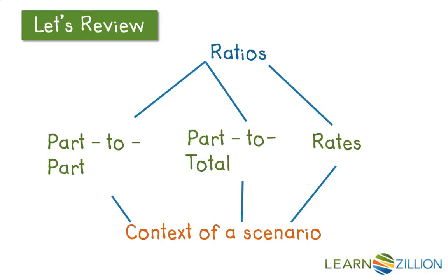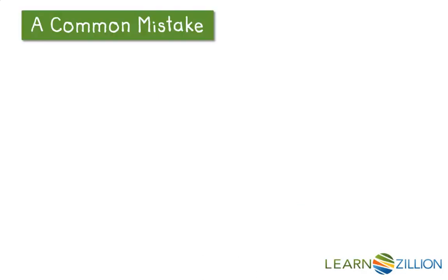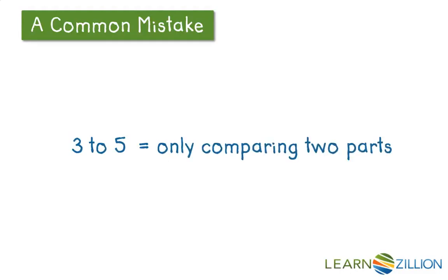Today we're going to focus on making sure we cover all bases of ratios by identifying the part-to-part and the part-to-total given a scenario. A common mistake we want to watch out for is falling into the trap of thinking that a ratio such as 3 to 5 can only be comparing two parts. We want to keep in mind that we can also have a ratio comparing a part to a total.